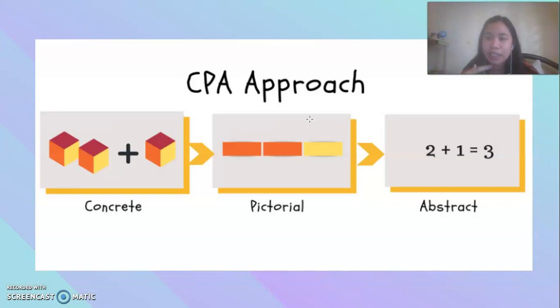An approach for learning is being integrated into this three-tiered model of learning. We call this the CPA approach. C stands for concrete—you know, they can manipulate these blocks. P stands for pictorial—pictures, graphs, maps like that. And A stands for abstract—verbal or numbers. Numbers, symbols, two plus one equals three.